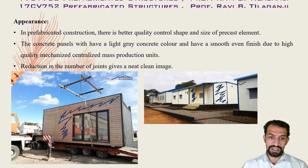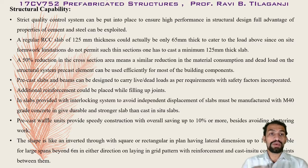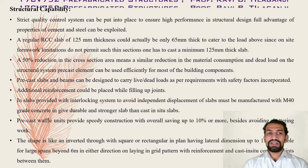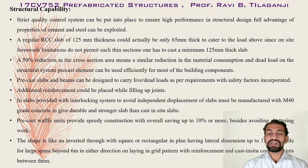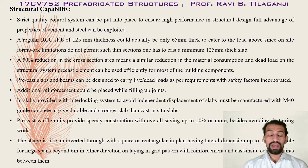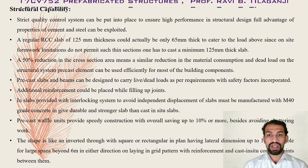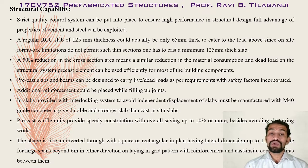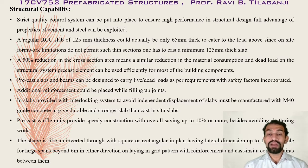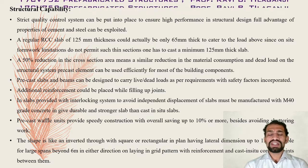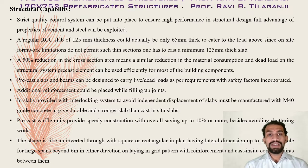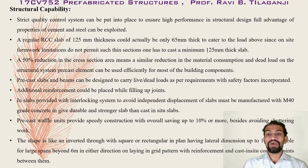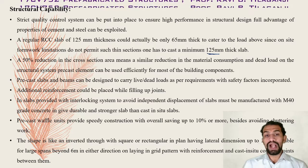Regarding structural capability, strict quality control can be put in place to ensure high performance in structural design. Full advantage of the properties of cement and steel can be exploited, same as in monolithic construction. A regular RCC slab of 125 mm thickness could actually be only 65 mm thick to cater for the load above, but on-site formwork limitations do not permit such thin sections, requiring a minimum of 125 mm thick slab.